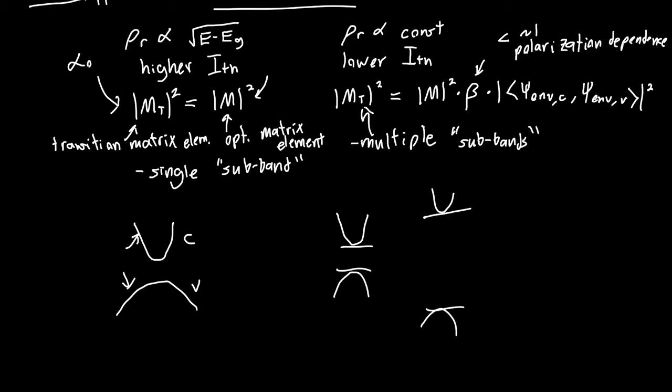But in the bulk case we only have a single sub-band, or a single band from which we can only transition from the conduction band to the valence band. So without further ado, in the next few videos we're going to go over the quantum well and how to model it, why we want quantum wells.